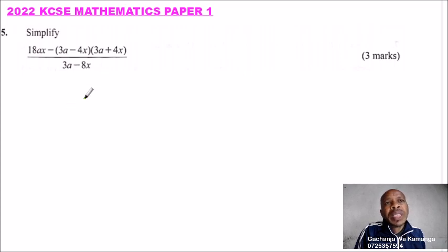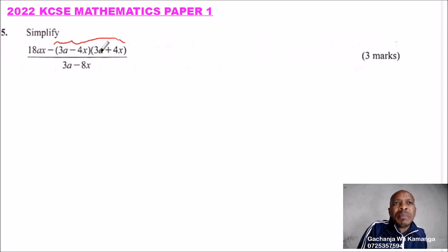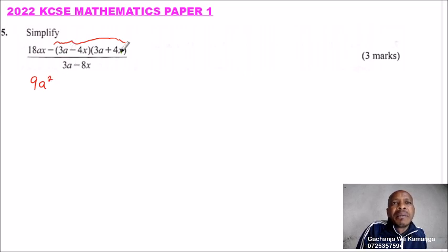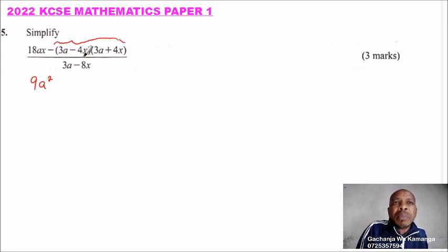To be able to do this, let's first expand this part here, so that we can combine with this one. We multiply 3a multiplied by 3a, that will give us 9a squared. 3a multiplied by 4x, that will be 12ax. Then minus 4x times 3a, that will be minus 12ax, so those cancel to 0. Then minus 4x multiplied by 4x, that will give us 16x squared.